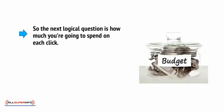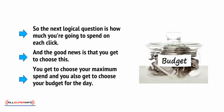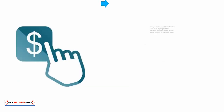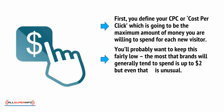So the next logical question is how much you're going to spend on each click. The good news is that you get to choose this. You get to choose your maximum spend and you also get to choose your budget for the day. First, you define your CPC, or cost per click, which is going to be the maximum amount of money that you're willing to spend for each new visitor. You'll probably want to keep this fairly low. The most that brands will generally tend to spend is up to $2, but even that's unusual.